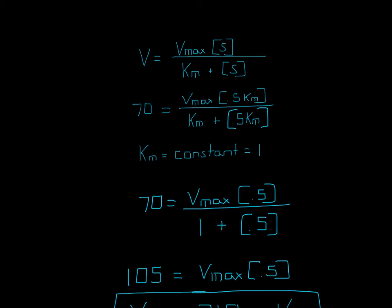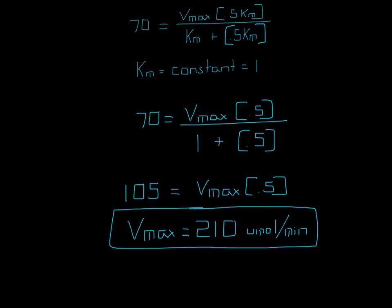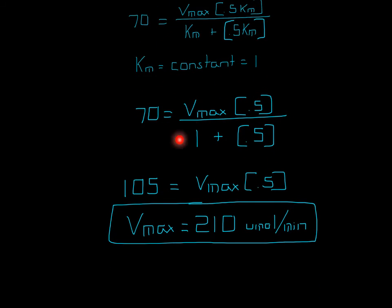So here, if we put in Km as 1, it'd be 1 here, and then 1 times 0.5 is 0.5, 1 times 0.5 is 0.5. Now it's just algebra, so it would be 1.5. We multiply each side by 1.5. This cancels out. 1.5 times 70 is 105, and then divided by 0.5 equals 210.